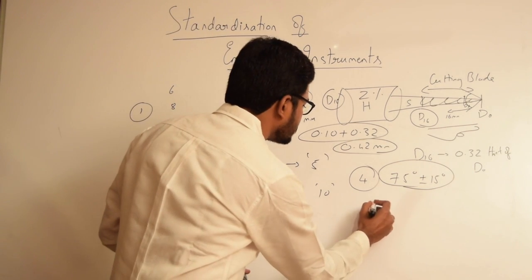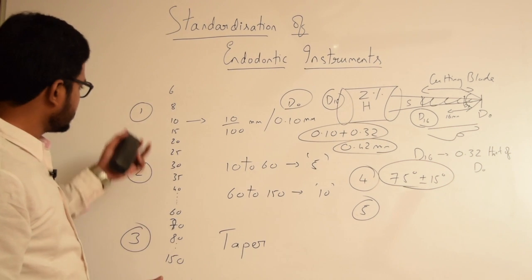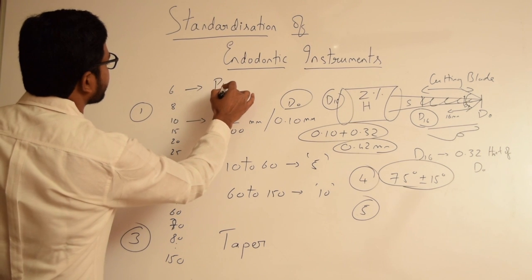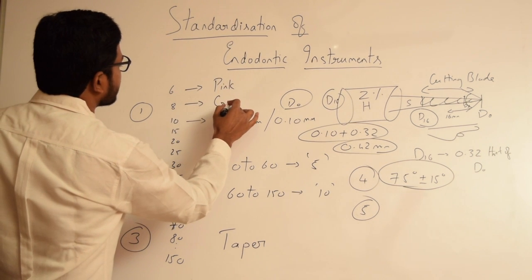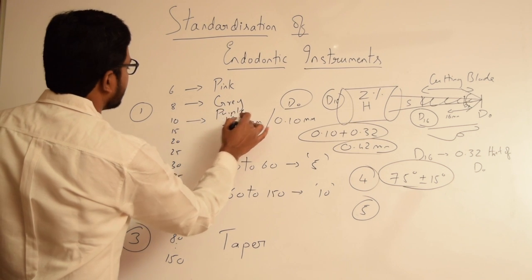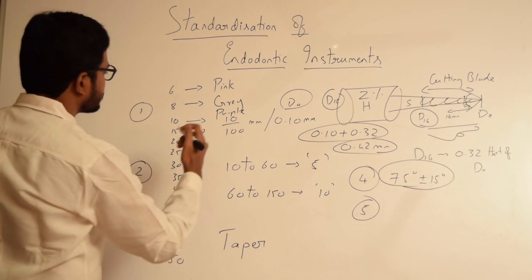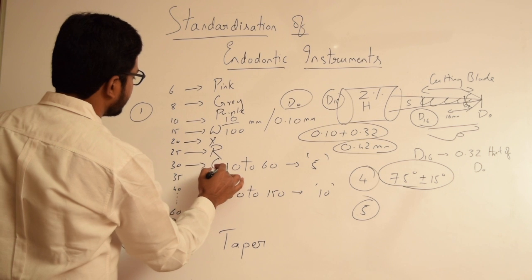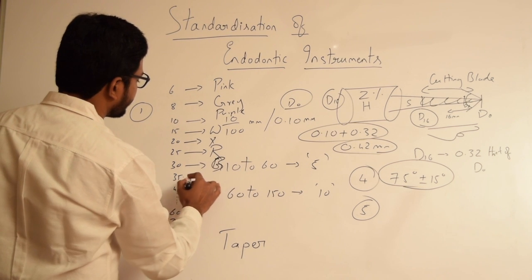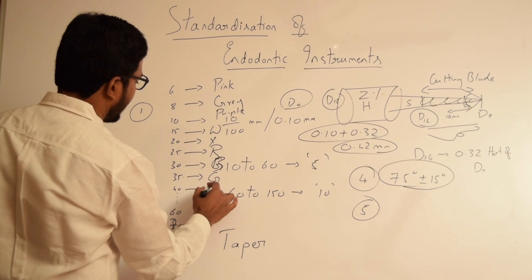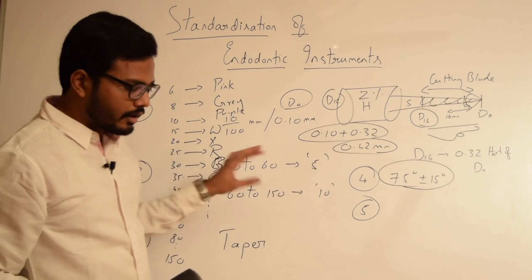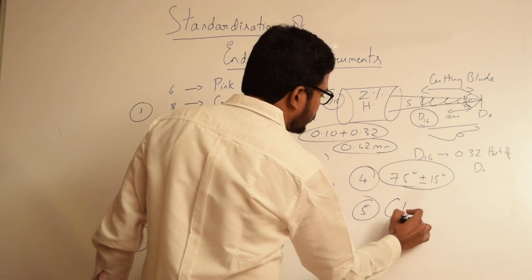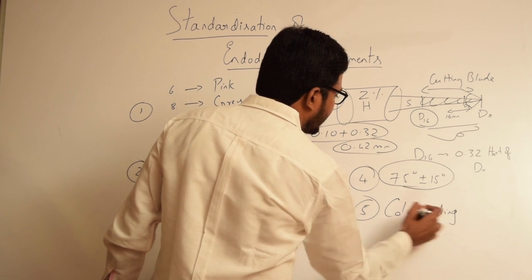Engel and Levine also proposed color coding because it helps identify instruments with ease. For size 6 the color is pink, size 8 is gray, size 10 is purple. Then a sequence of colors repeats: size 15 is white, 20 is yellow, 25 is red, 30 is blue, 35 is green, and 40 is black. The sequence then repeats. So that's how color coding has been incorporated for endodontic files.